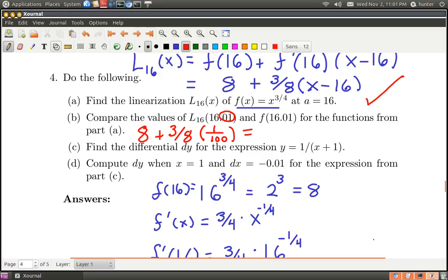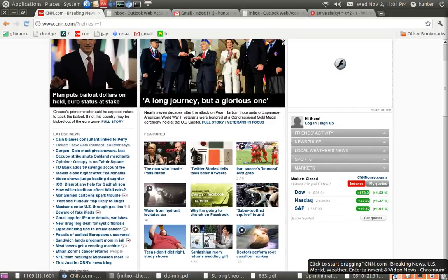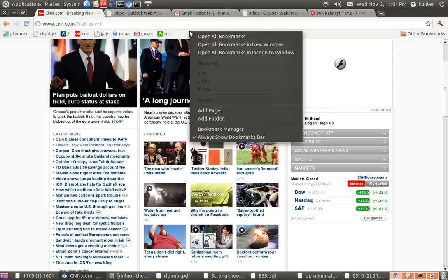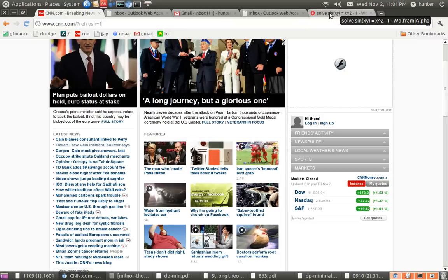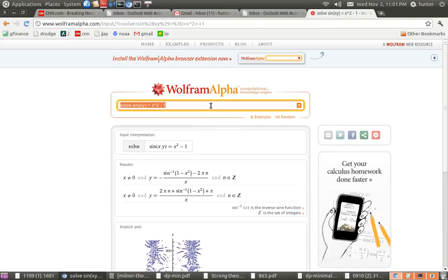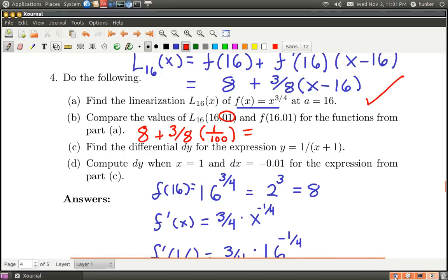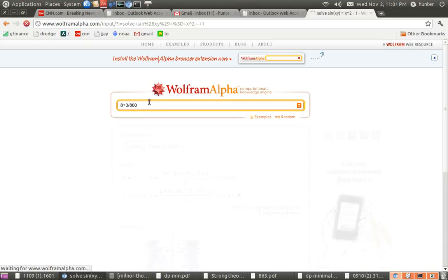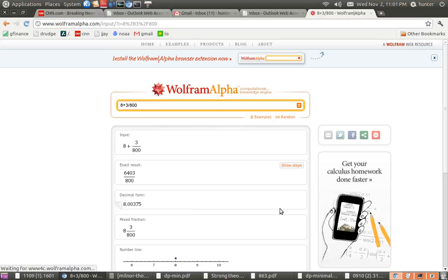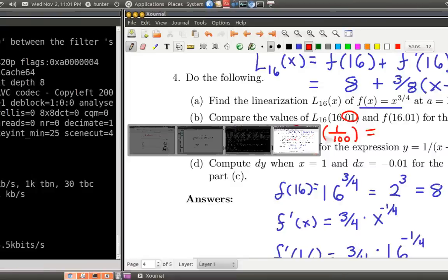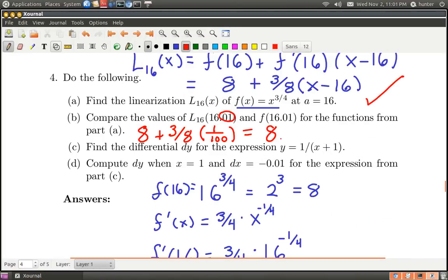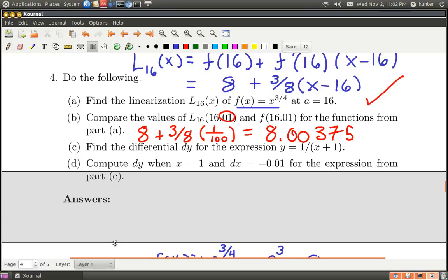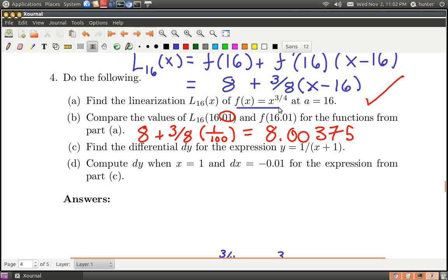But I guess I still need a calculator to get a decimal. Let's hope I don't have an embarrassing webpage up. I don't. Let's go to Google or we could use Wolfram Alpha. So what's the number? I think it was 8 plus 3/8. And so that's actually 800 on the bottom there, 3/800. And that turns out to be 8.00375. Let's make a note of that. So I have to compare that to f(16.01).